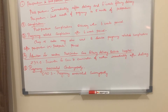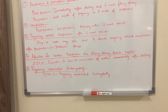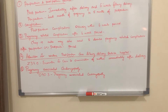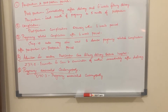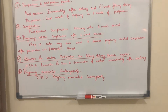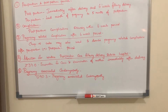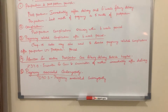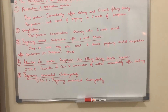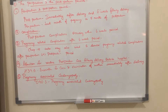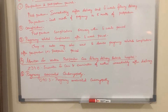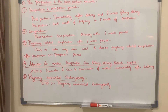Pregnancy-associated cardiomyopathy is usually noticed in the last trimester of pregnancy and can also develop after the pregnancy, in which case it is called postpartum cardiomyopathy. The code for this is O90.3, pregnancy associated cardiomyopathy.